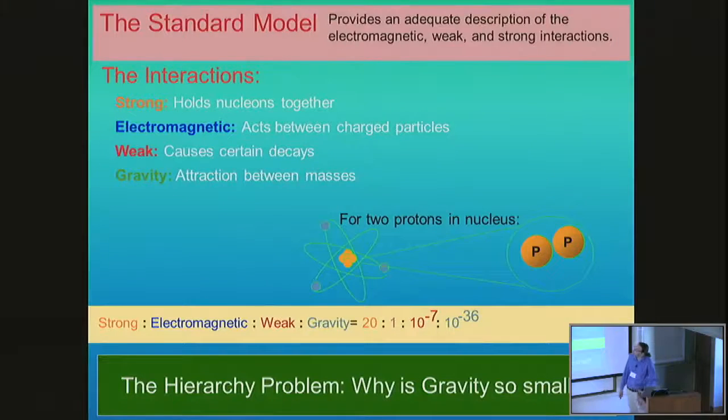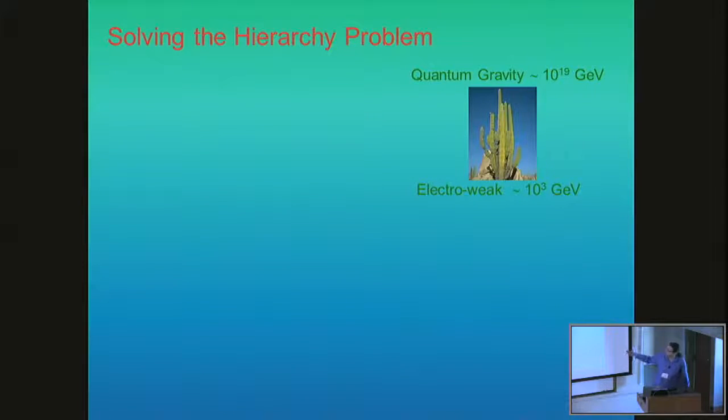If you look at the strength of interactions in the standard model, for example two protons inside the nucleus, there's this huge disparity of the strength of most of the standard model forces with that of gravity. This leads to the hierarchy problem, which is why gravity is so small compared to the other forces in nature. There's this huge desert between the energy scale of electroweak physics, which may be at the TeV scale, and the energy scale of quantum gravity at the Planck scale, some 16 orders of magnitude above that. This leads to a theoretical conundrum of naturalness or fine-tuning, where one has to tune a parameter in the Lagrangian at the 32nd decimal point to get a physical value for the Higgs mass.